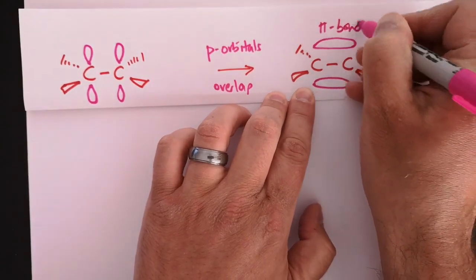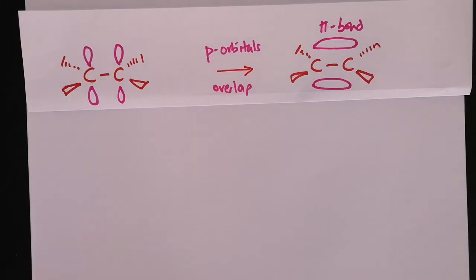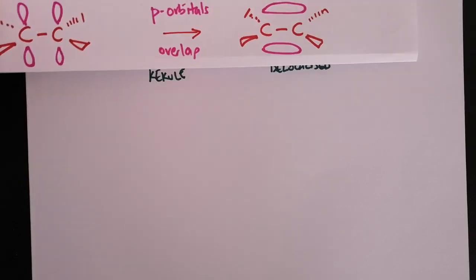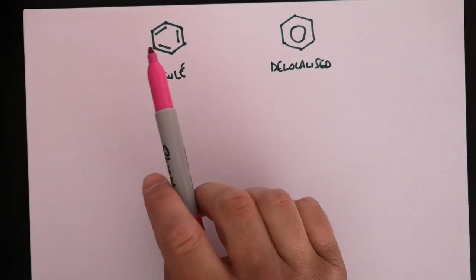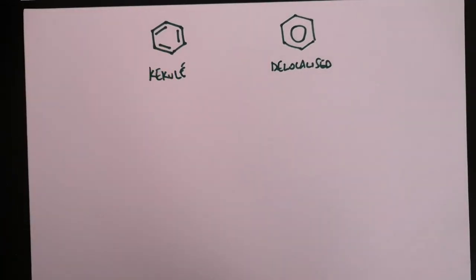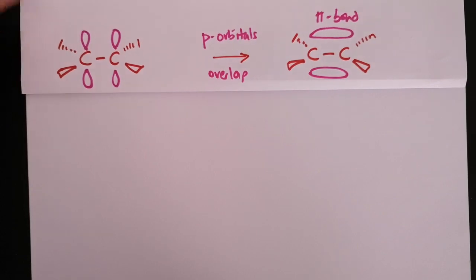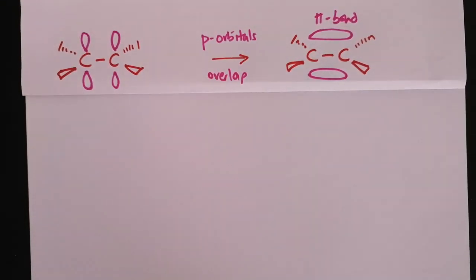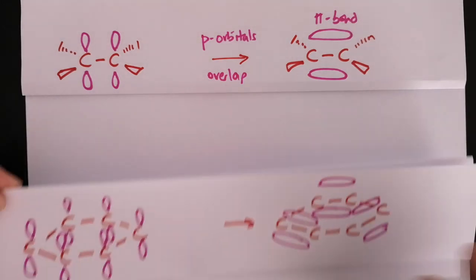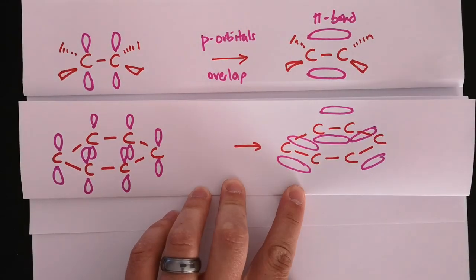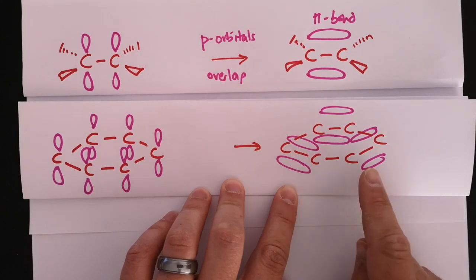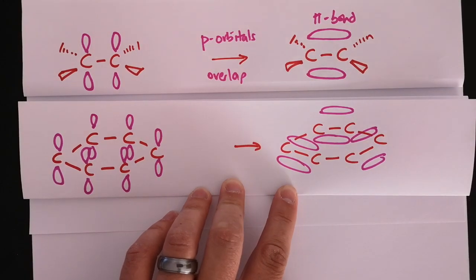The pi bond looks like overlap above and below the sigma bond - that is a pi bond, that's what a double bond is. Now if we go back to our structures, the Kekulé structure seems to have three double bonds around it. So comparing what I've just drawn with a situation where we have three double bonds in a ring, the Kekulé model would have three double bonds between alternating sets of carbons.